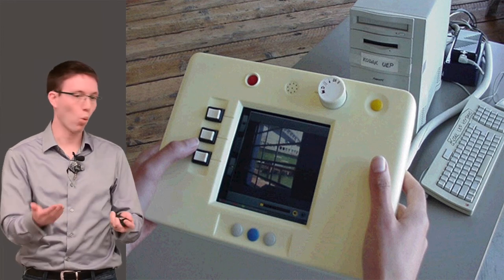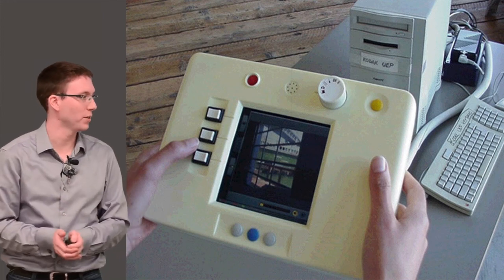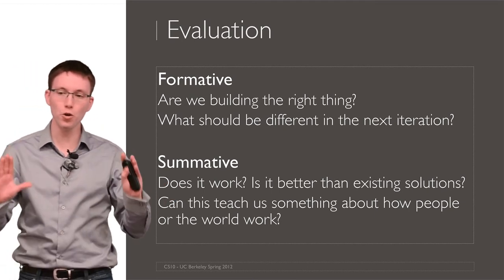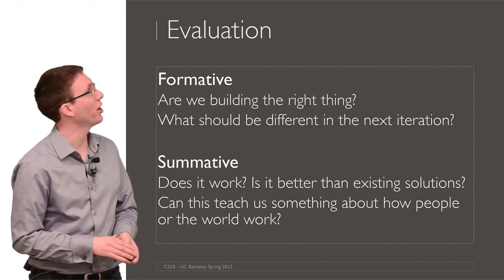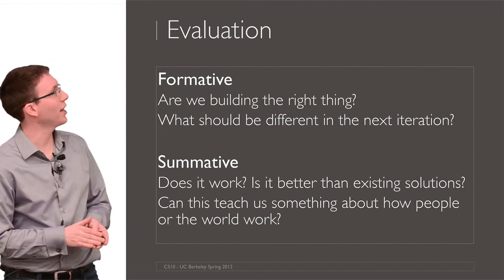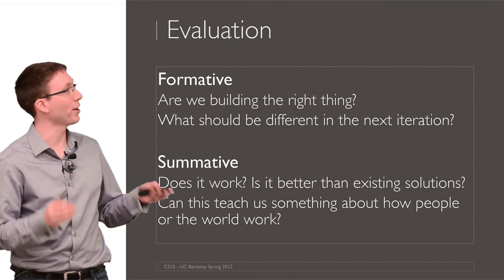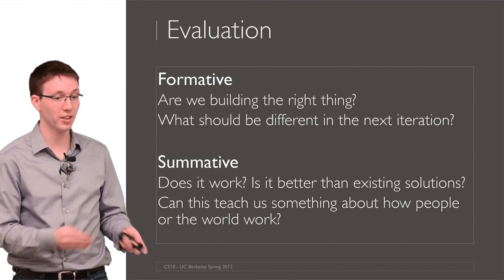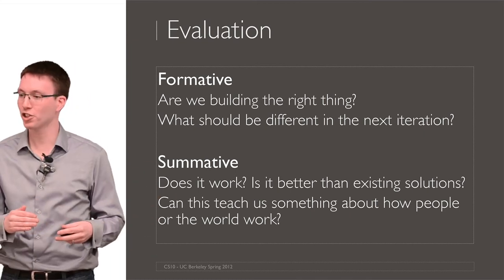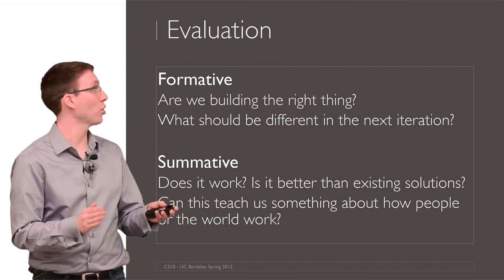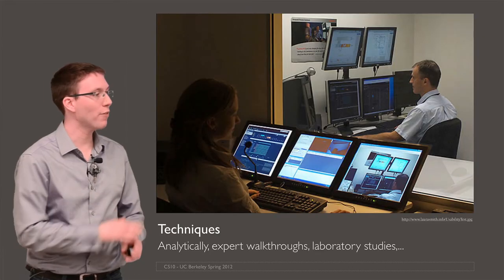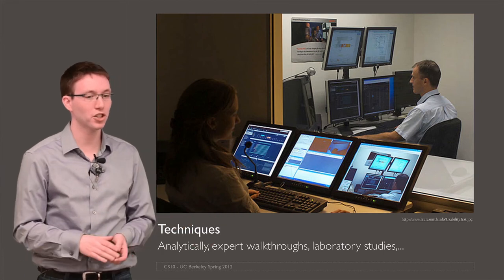Then you can test: what should the screen show? What should the user interface elements be? Moving on to evaluation — there are two big categories of evaluation: formative and summative evaluation. Formative evaluation asks the question, are we building the right thing, and what should be different in the next iteration? So you do that early on. Summative evaluation asks, our project is complete — does it work? Did it achieve its goal? And we have a whole range of different evaluation techniques.